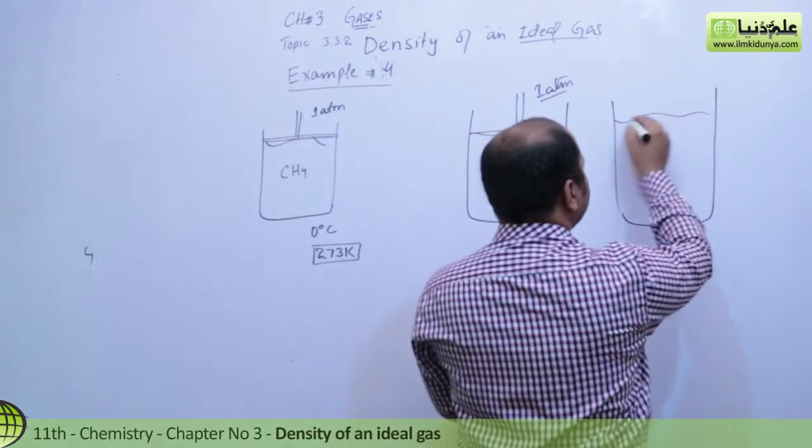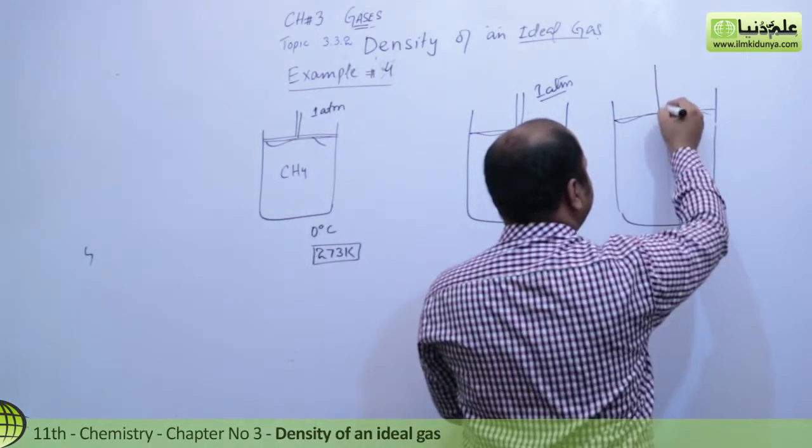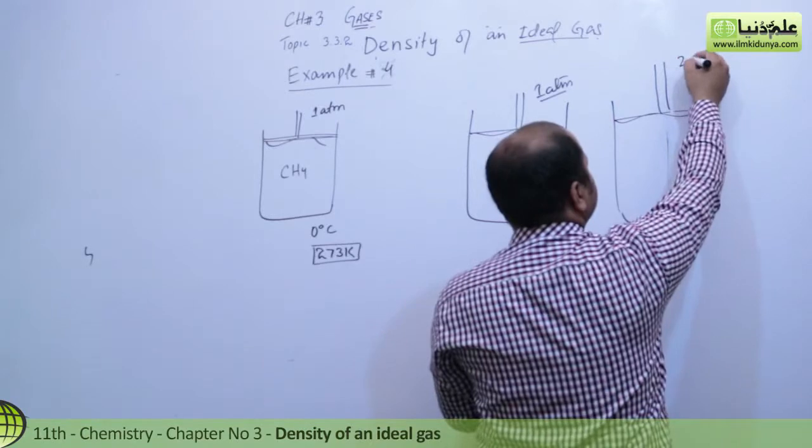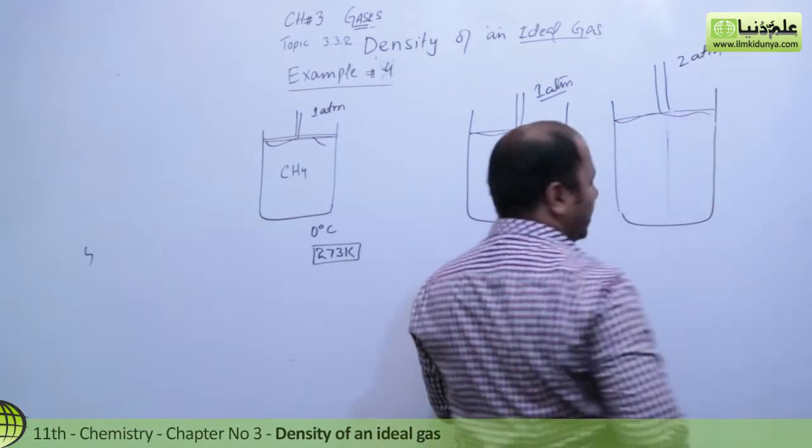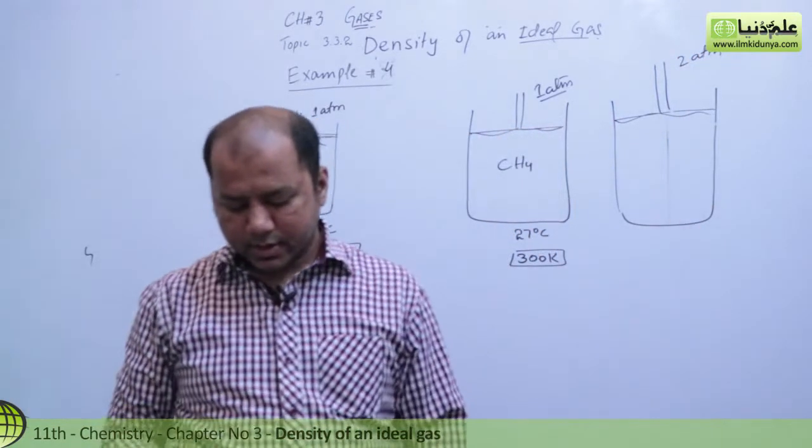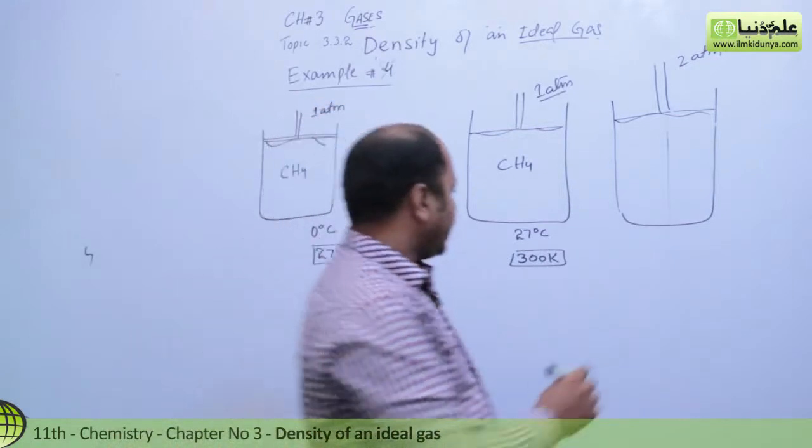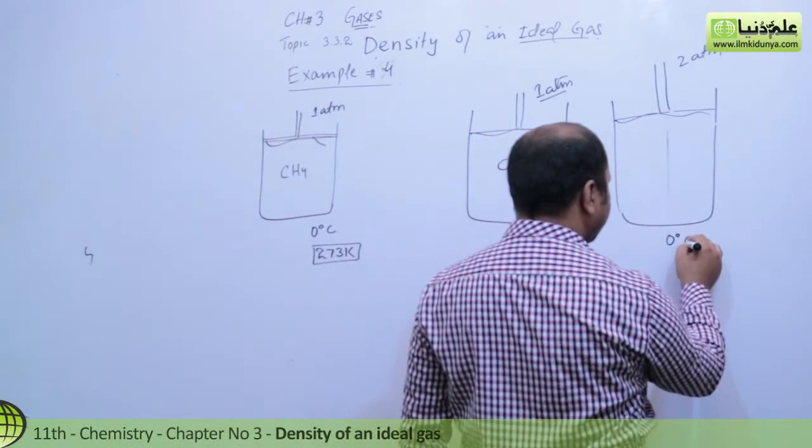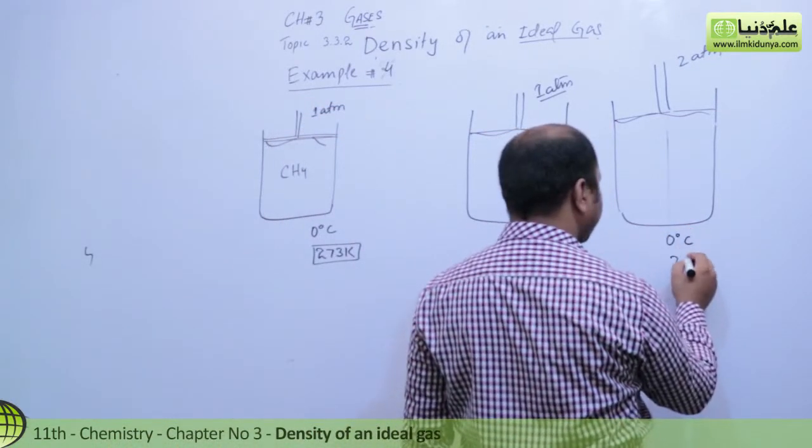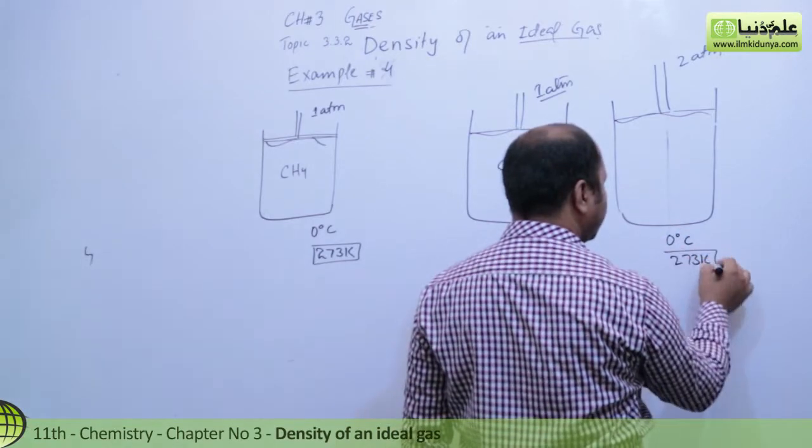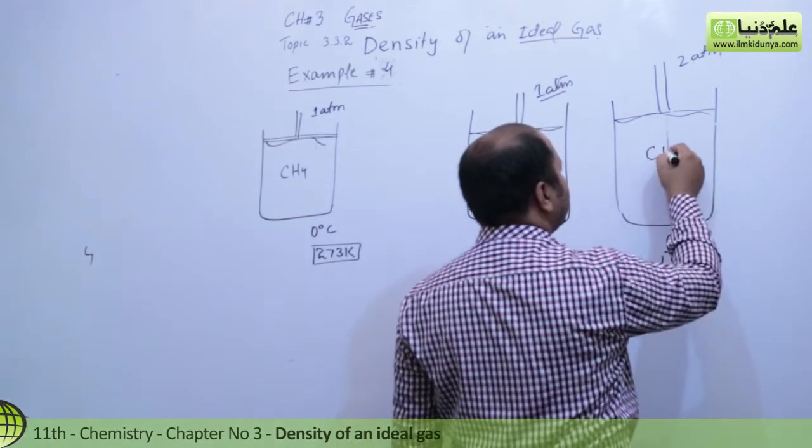Now what we're going to do is change the pressure. We have taken the temperature same as zero degrees, 273 Kelvin. The methane gas is the same.